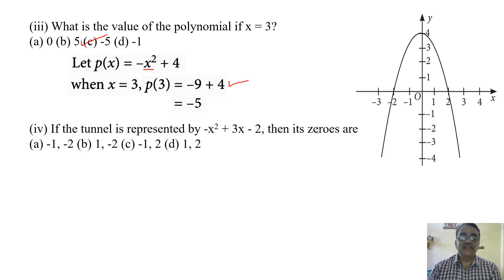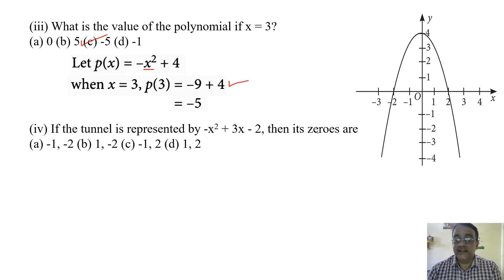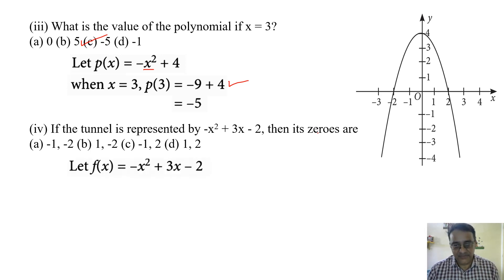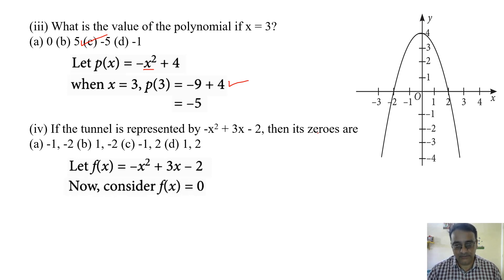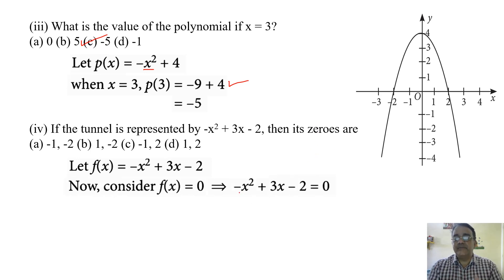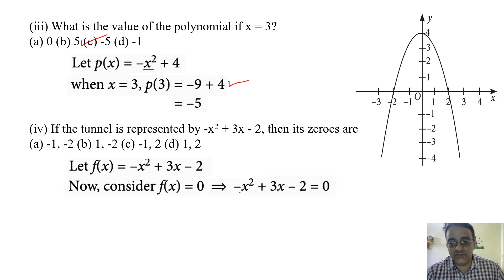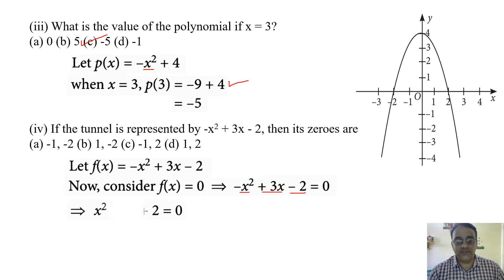If the tunnel is represented by minus x squared plus 3x minus 2, find its zeros. Equate with zero. Multiply both sides by minus 1 to get x squared minus 3x plus 2 equals zero. Splitting: minus 2x minus x gives x into x minus 2 minus 1 into x minus 2, so x minus 1 into x minus 2 equals zero. The two zeros are 1 and 2. Correct option is D.